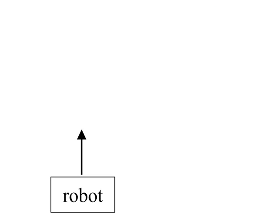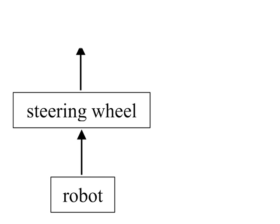Specifically, we model each object, including the robot, as a Markov decision process. One object affecting another is modeled by coupling the two corresponding Markov decision processes with the state of the affecting object being the action of the affected object.